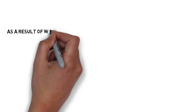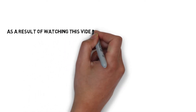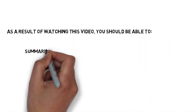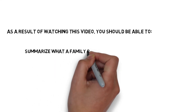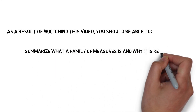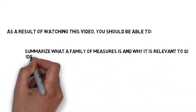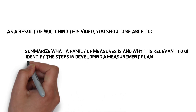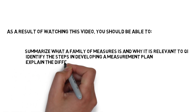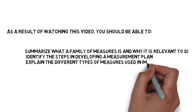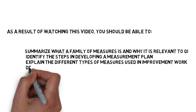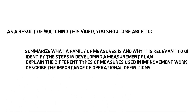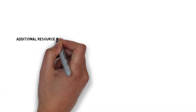This concludes Module 2 of Measuring for Improvement. As a result of watching this video, you should now be able to summarize what a family of measures is and why it is relevant to QI, identify the steps in developing a measurement plan, explain the different types of measures used in improvement work, and describe the importance of operational definitions.